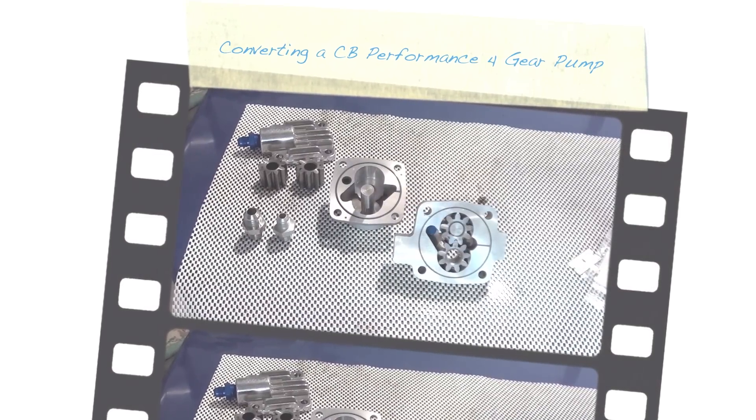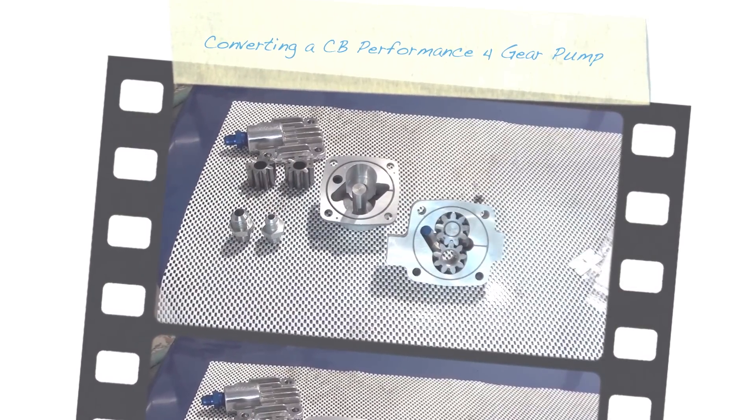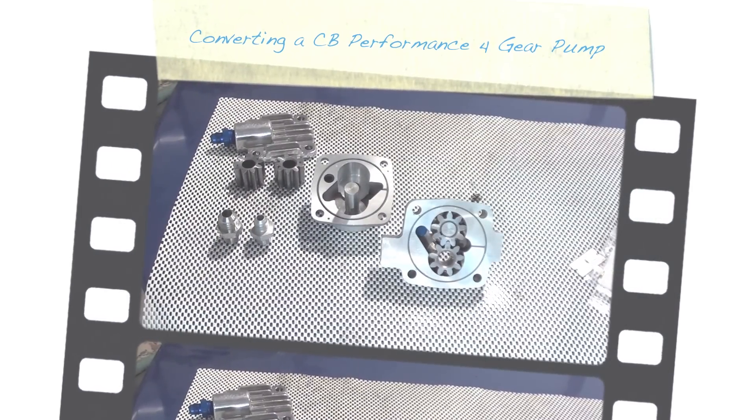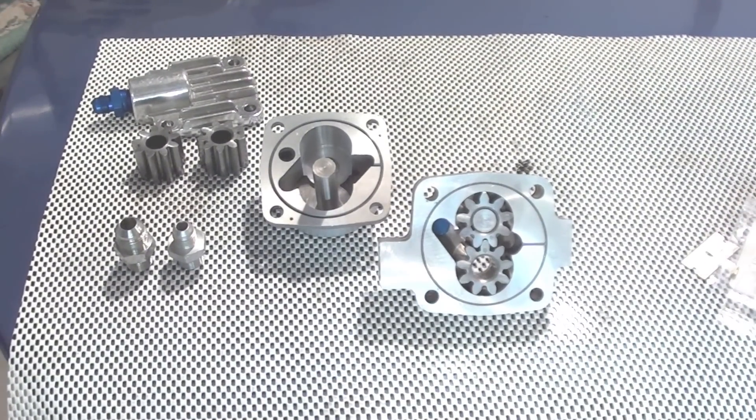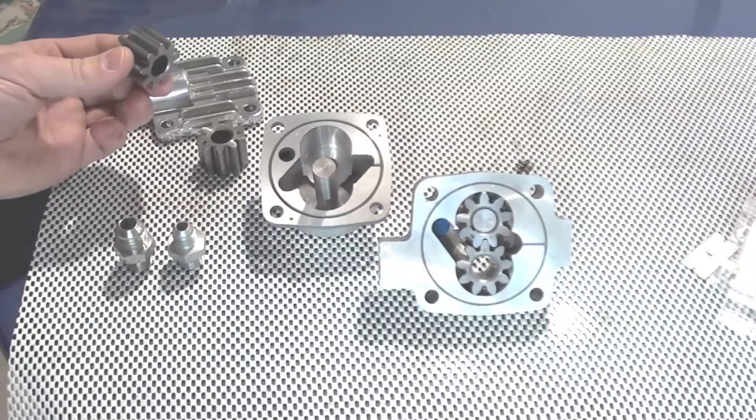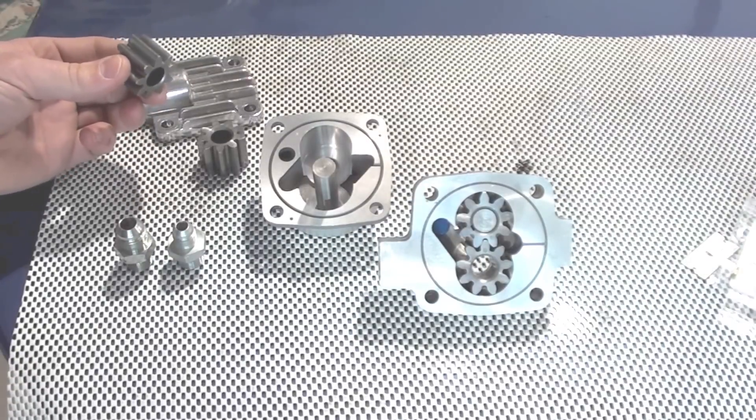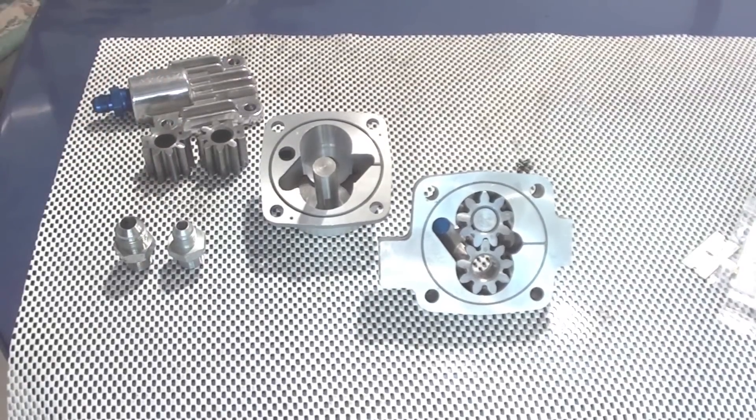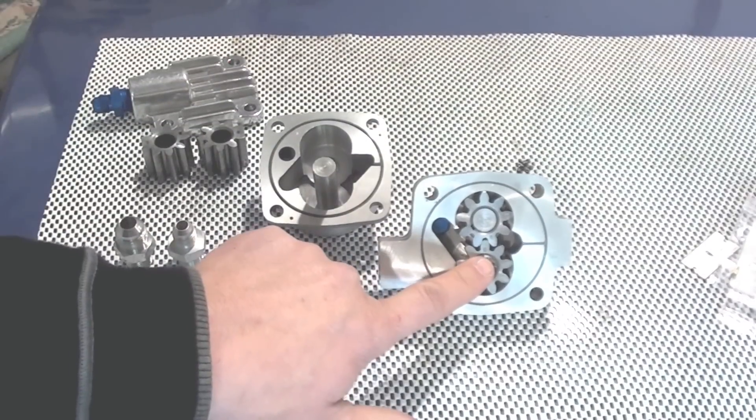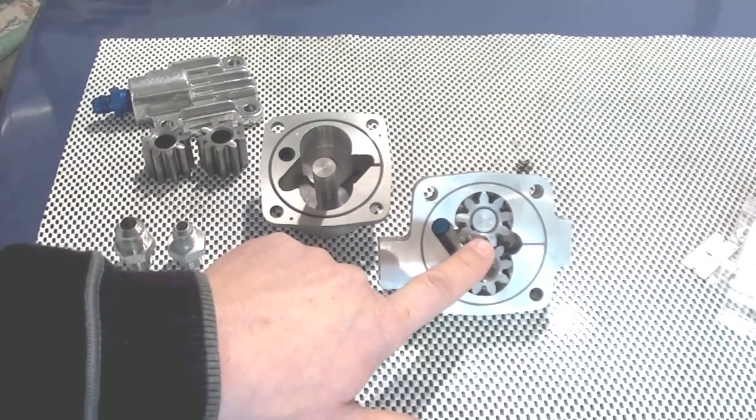What we're looking at is a CB Performance 4-gear oil pump meant for dry-sumping a system. However, the way the system works from the factory is that it uses the larger set of gears to pull the oil from the pan and send it to your filter and tank, while using the smaller set of gears to feed the engine for oil pressure.